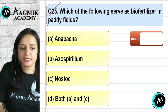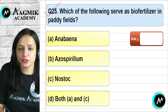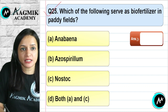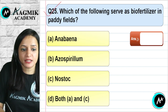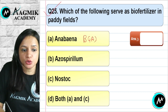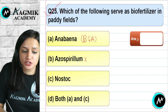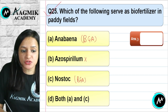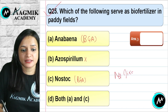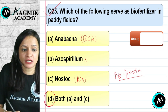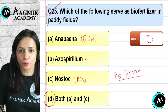Question number 25: Which of the following serve as biofertilizers in paddy fields? Anabaena is a blue-green algae that helps in nitrogen fixation, increasing soil fertility. Azospirillum cannot be used here. Nostoc is also a heterocystous blue-green algae that performs nitrogen fixation and increases fertility and productivity. The correct option is D — both A (Anabaena) and C (Nostoc).